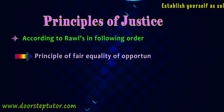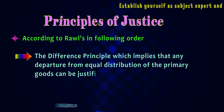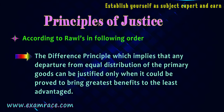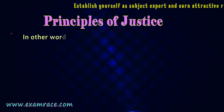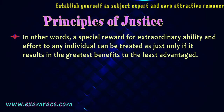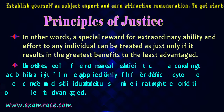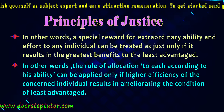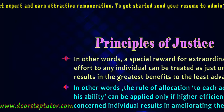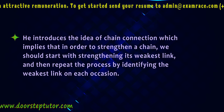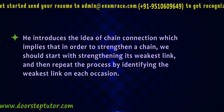The second principle is the principle of fair equality of opportunity, particularly for acquiring offices and positions. The third is the difference principle, which implies that any departure from equal distribution of primary goods can be justified only when it could be proved to bring the greatest benefits to the least advantaged. A special reward for extraordinary ability and effort can be treated as just only if it results in the greatest benefits to the least advantaged. Here, Rawls introduces the idea of chain connection, which implies that to strengthen a chain, we should start with strengthening its weakest link and repeat the process by identifying the weakest link on each occasion.